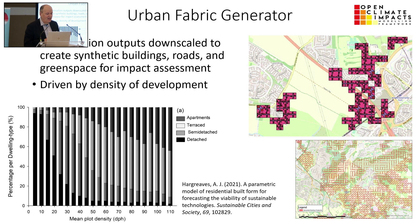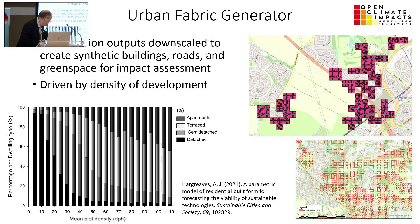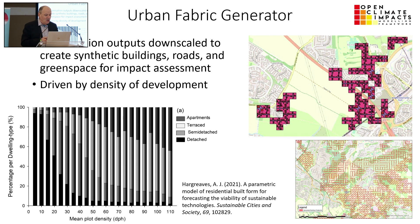In the urban fabric generator, this relationship is taken and as density increases, the mix of buildings changes, reflecting published work that mapped these out. For each one-hectare grid, we look at buildings, roads, and green space. So we get a synthetic view of what it would look like for impact assessment.